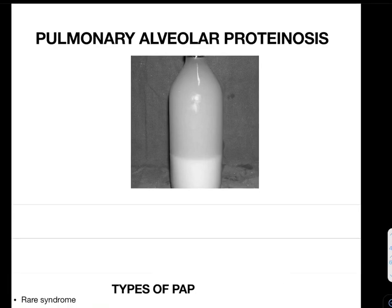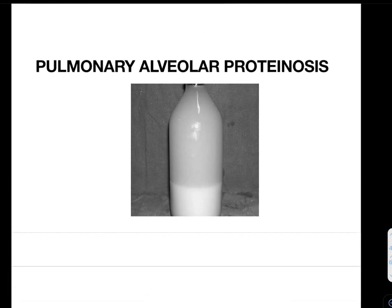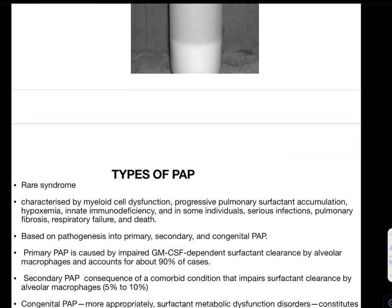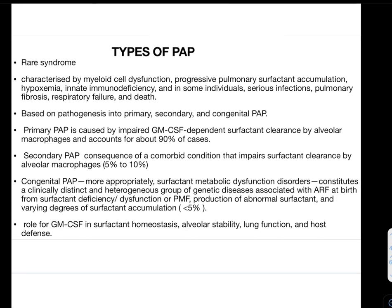Today we will discuss pulmonary alveolar proteinosis. It is a rare disease characterized by myeloid cell dysfunction, progressive pulmonary surfactant accumulation, hypoxemia, innate immunodeficiency, and in some individuals it can lead to serious infection, pulmonary fibrosis, respiratory failure, and death. Based on pathogenesis, it can be divided into three parts: primary, secondary, and congenital PAP.